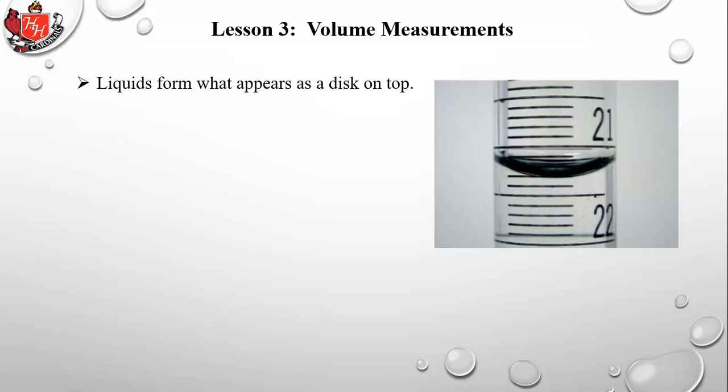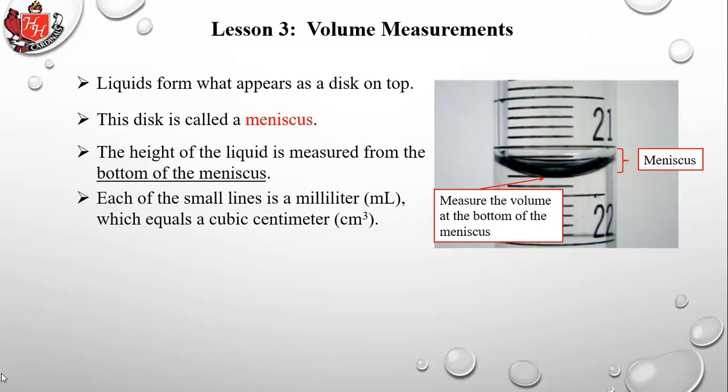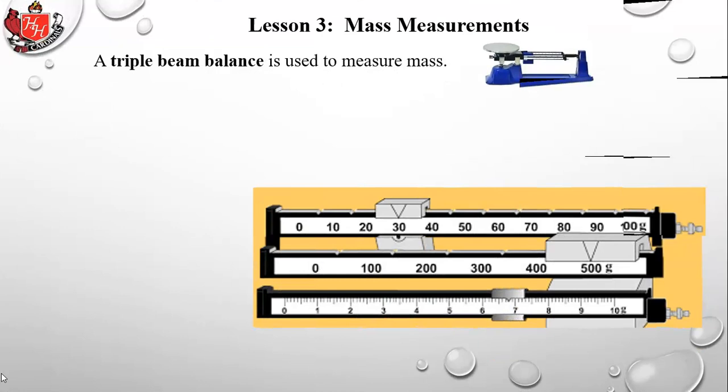Liquids in glass containers form a curved surface called a meniscus — it looks like a small bowl. The height of the liquid is measured from the bottom of the meniscus. Each small line on a graduated cylinder is a milliliter (mL). There are 1,000 milliliters in a liter, and one milliliter equals one cubic centimeter (cm³).